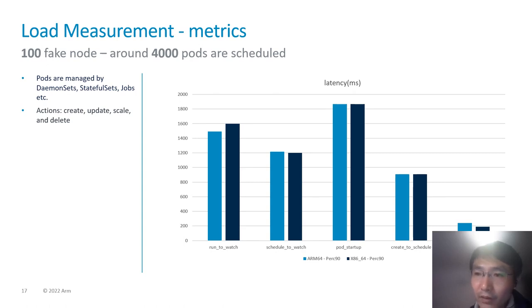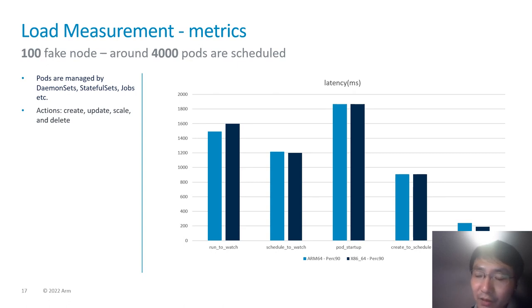For Load testing, we schedule even more pods to each node. The difference compared with Density testing is that Load testing deploys DaemonSets, StatefulSets, and other kinds of Kubernetes resources to each node, instead of just deployments. In other words, Density testing is a simpler form of Load testing. The data in the Load test is similar to the Density test — again, there is no significant difference between different platforms. Clusterloader also contains tests to measure the performance of network and storage functionality, which you can also explore.